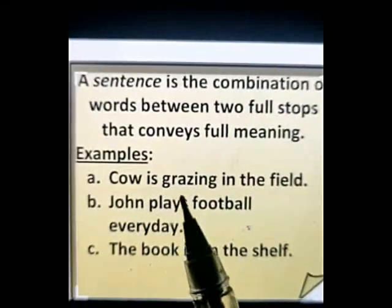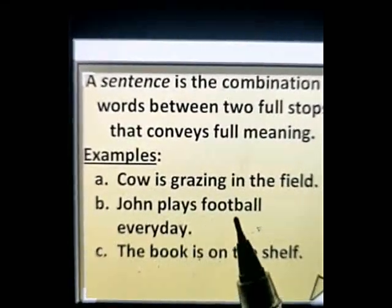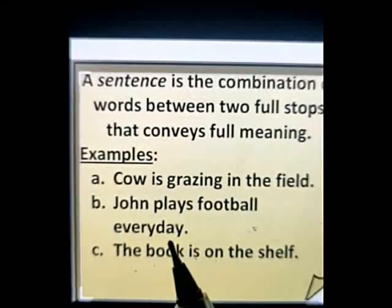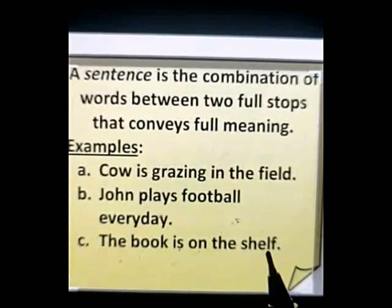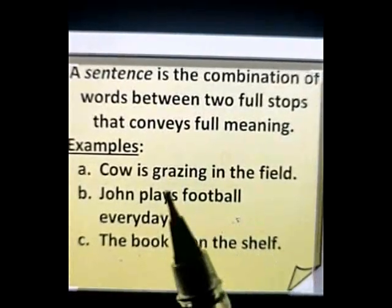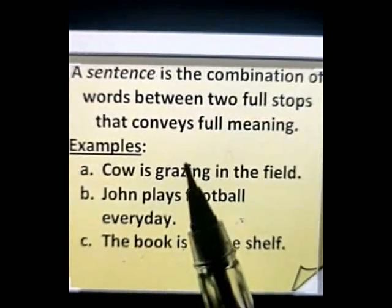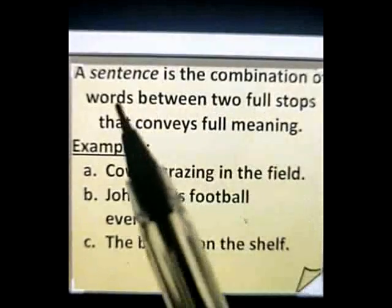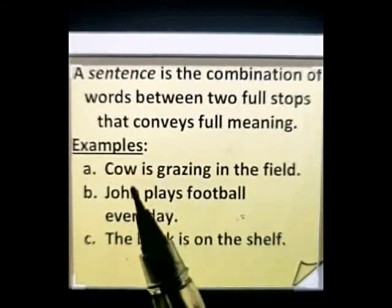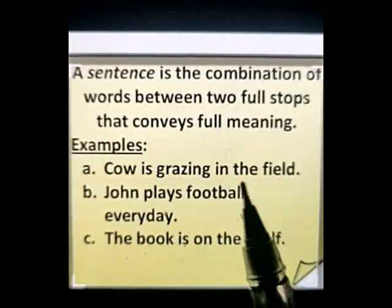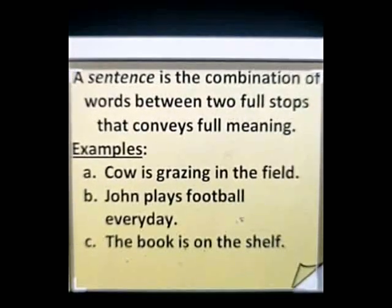Now let's understand sentences with the help of examples. First: 'Cow is grazing in the field.' Second: 'John plays football every day.' Third: 'The book is on the shelf.' These three are examples of sentences — each is a combination or group of words giving complete and full meaning.